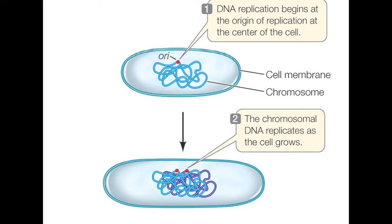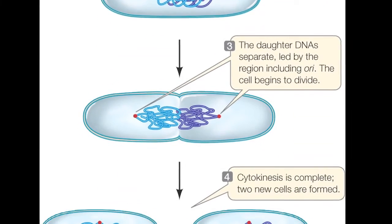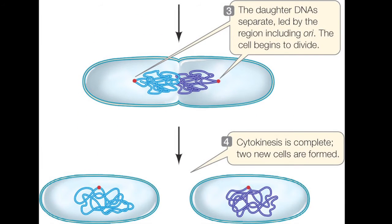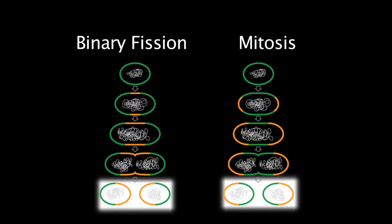Binary fission is the reproduction of a prokaryote by division of a cell into two comparable progeny cells. Binary fission and mitosis are similar in that cell division by either one produces two genetically identical cells.